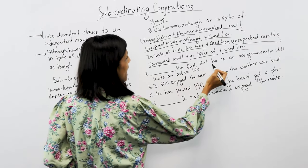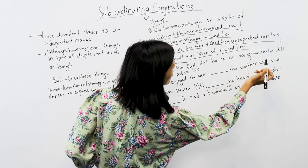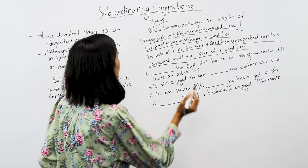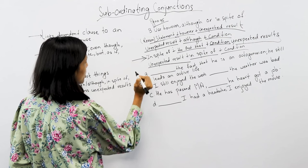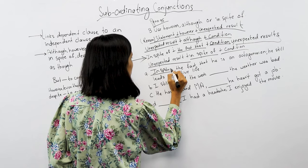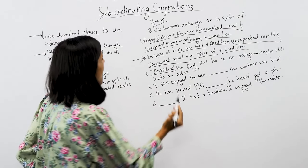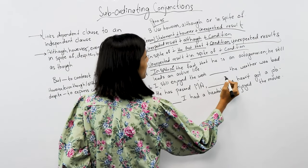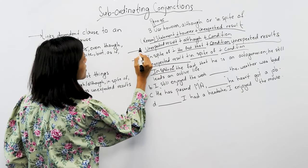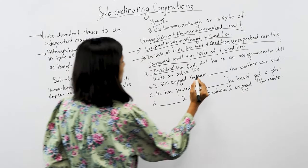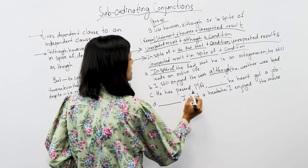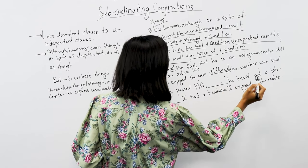Let's do the exercise. We have to do the structure using 'in spite of' for practice. Number B: 'I still enjoyed the week. The weather was bad.' Number B requires us to solve using the second structure. Number C: 'He has passed MA. He has not got a job.'